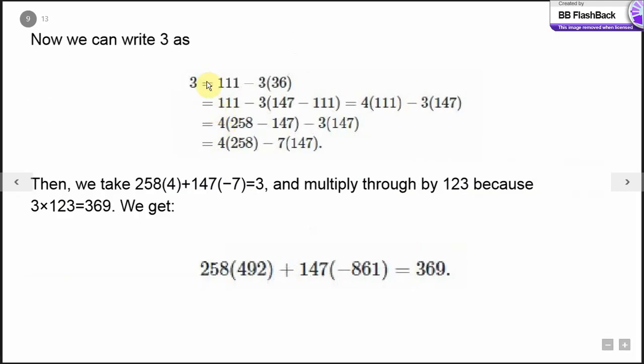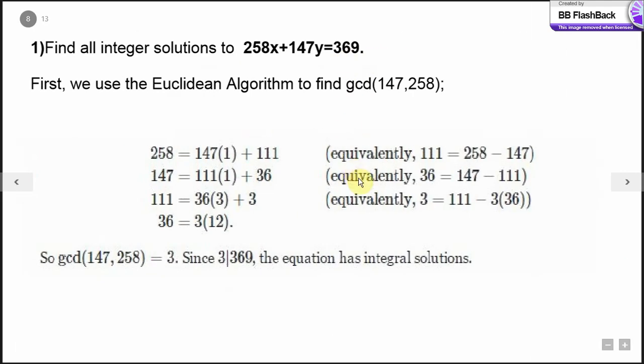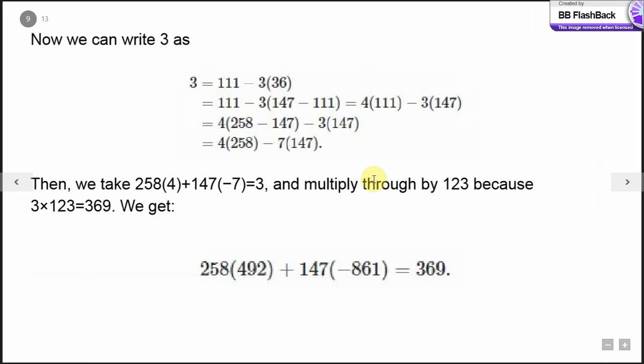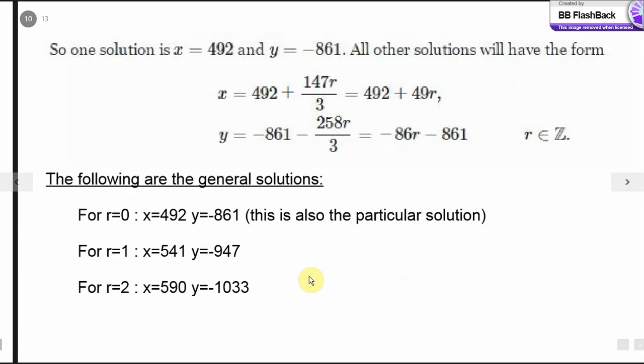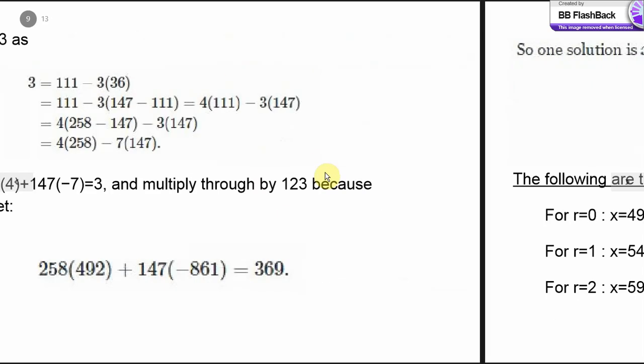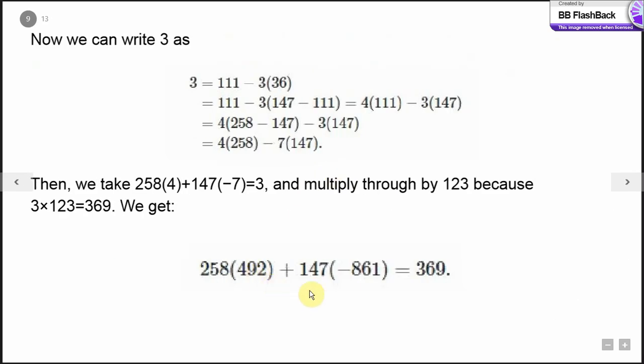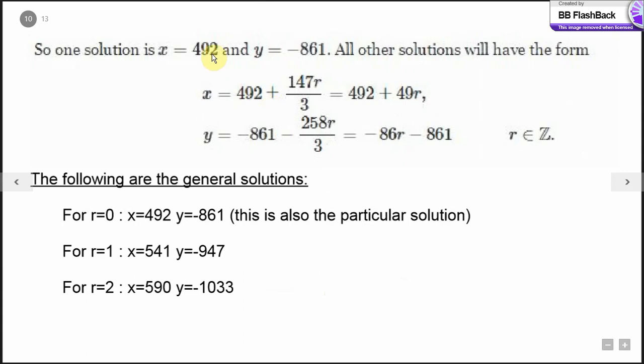3 can be written in this format. I have traced this in the previous step as well so that it's easier to follow. This is what we get as the final representation and multiply it by 123 because 3 into 123 gives 369. As you can see, x equals sk, y equals tk, so we get x equal to 492 and y equals minus 861.